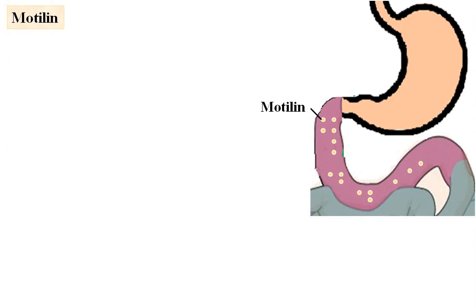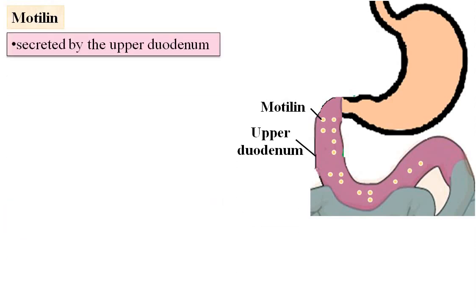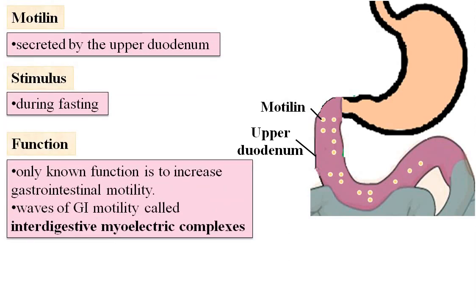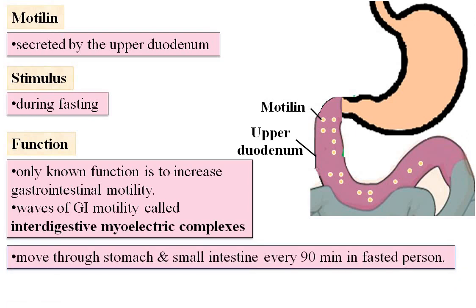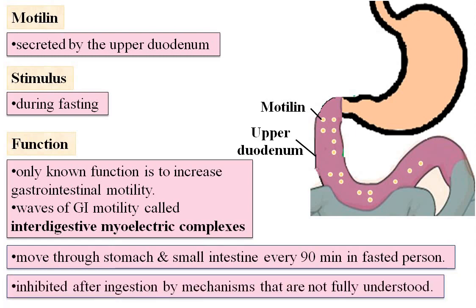Motilin is secreted by the upper duodenum during fasting. The only known function of motilin is to increase gastrointestinal motility. The waves of gastrointestinal motility are called interdigestive myoelectric complexes. Such waves move through the stomach and small intestine every 90 minutes in a fasted person. When food is ingested, such waves are inhibited by mechanisms that are not fully understood.